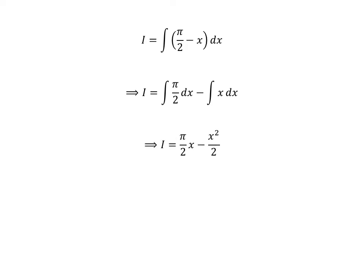These are simple integrations. As pi over 2 is constant, so integration of pi over 2 is pi over 2 times x, and integration of x is x squared upon 2.